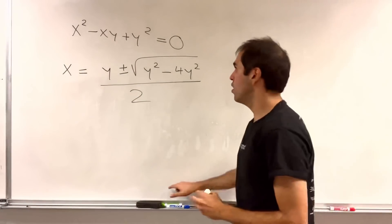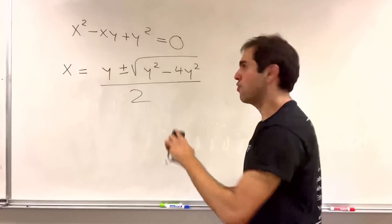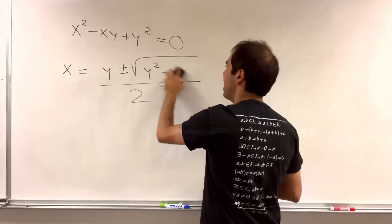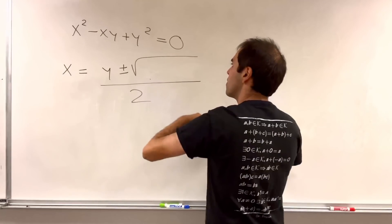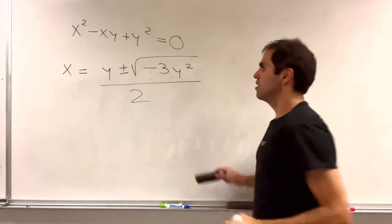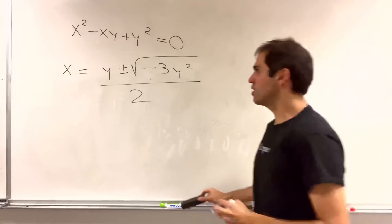Which now becomes y squared minus 4y squared, that's minus 3y squared.